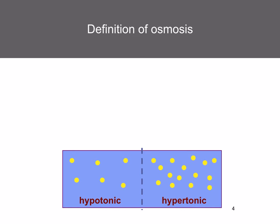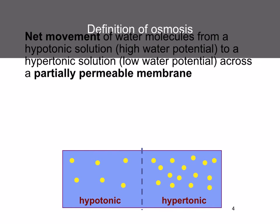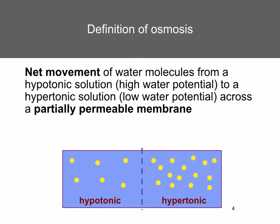In the previous topic, we looked at the definition of osmosis and why it occurs. You need to define osmosis in terms of hypotonic and hypertonic. Osmosis is the net movement of water molecules from a hypotonic solution, which has a high water potential, to a hypertonic solution, which has a low water potential, and this occurs across a partially permeable membrane. Have a look at this diagram — which way will water move by osmosis? It's going to move from the hypotonic solution to the hypertonic solution.